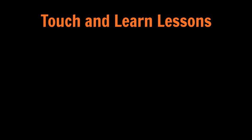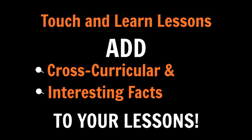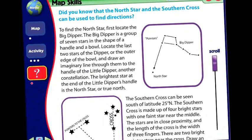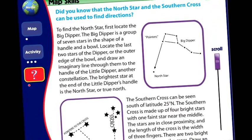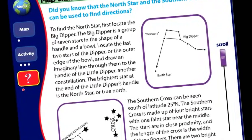The touch and learn lessons on each main page add cross-curricular and other interesting facts to your lessons, making them that much more engaging for your students. This particular segment features information about constellations that adds value to the latitude lesson.